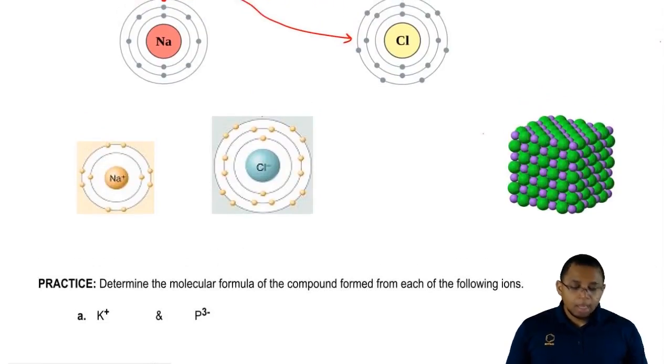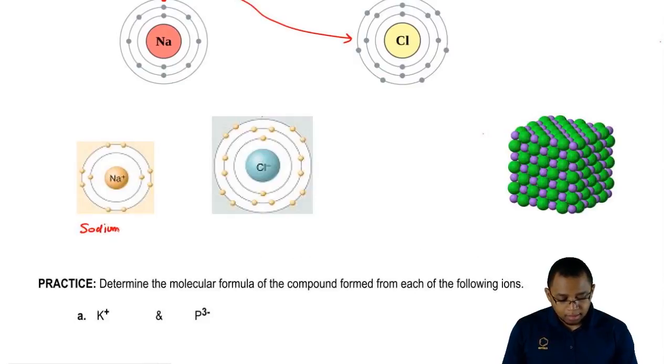Chlorine picks up that electron that sodium transfers over. So, now it becomes Cl minus, it becomes chloride ion. So here we have sodium ion, here we have chloride ion. Because they're opposite charges, they're going to combine together to give us this compound right here.